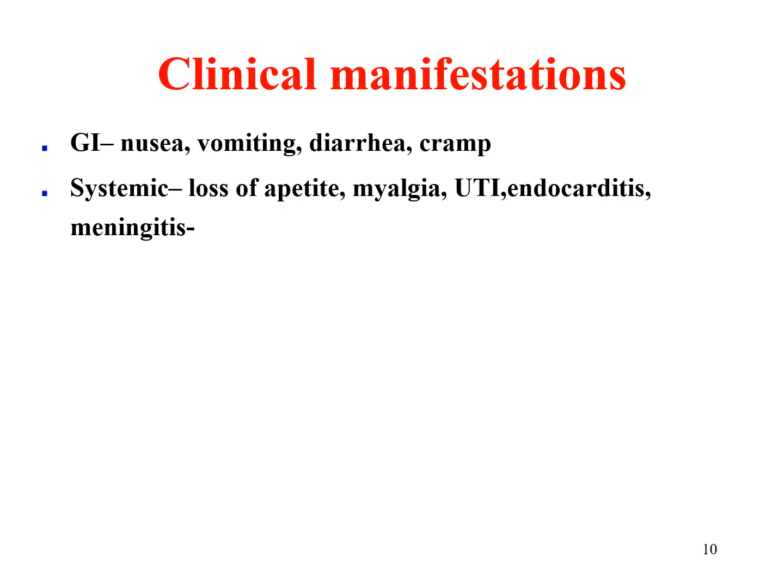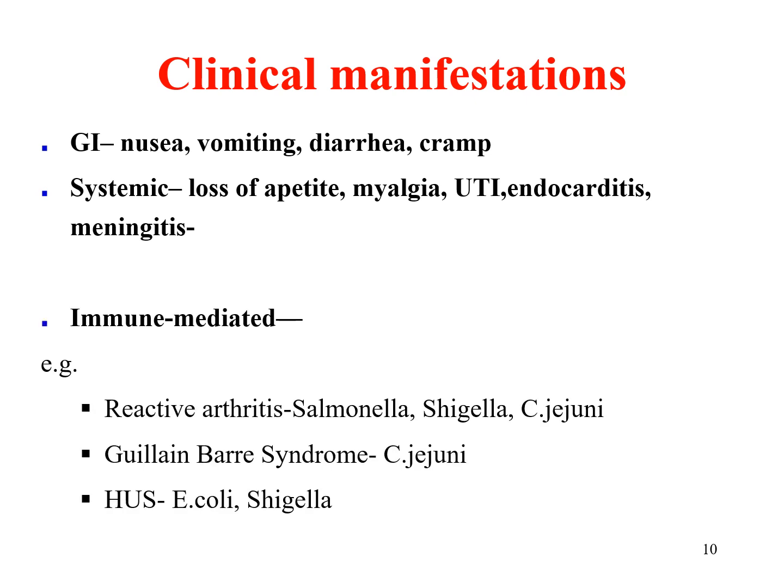The clinical manifestations of diarrhea are classified as GI, systemic, and immune-mediated. GI symptoms can be nausea, vomiting, diarrhea, and cramping, whereas systemic manifestations can be loss of appetite, myalgia, endocarditis, and meningitis. Immune-mediated disease can be reactive arthritis, which may be caused by Yersinia, Shigella, and Campylobacter jejuni. Guillain-Barré syndrome can occur in the case of Campylobacter jejuni. Hemolytic uremic syndrome (HUS) can occur after diarrhea following E. coli and Shigella.